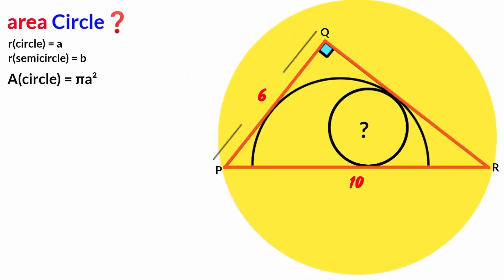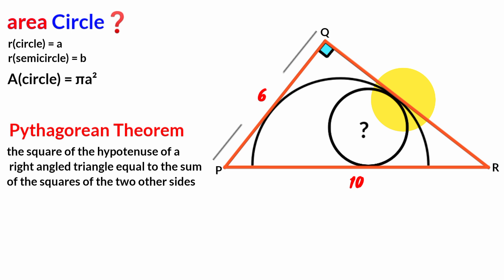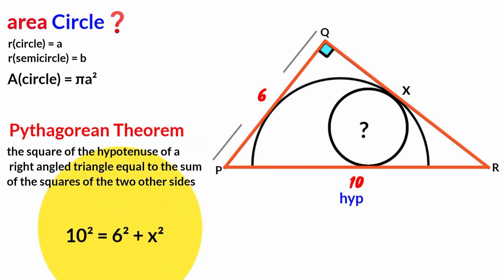Let's look at this triangle — it is a right-angle triangle and we have the lengths of two of its sides: 6 units and 10 units. We can use the Pythagorean theorem to find the length of the third side, which we call x. The Pythagorean theorem states that the square of the hypotenuse equals the sum of the squares of the other two sides. The hypotenuse is the side facing the right angle.